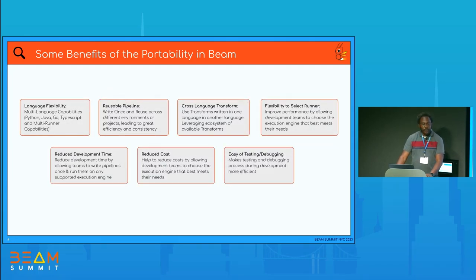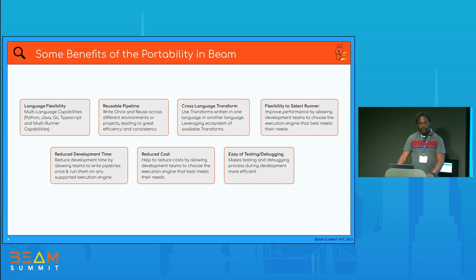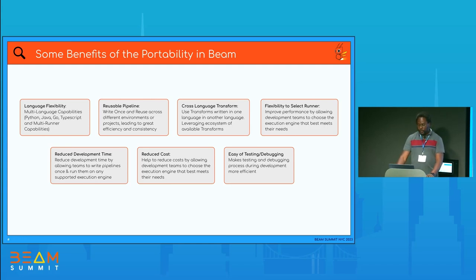The benefits of portability for our team include language flexibility — we have people natively writing in Python, Java, and Golang. As long as you select the SDK, you can run on any of our runners, giving us language-agnostic behavior. We can create reusable pipelines and leverage the cross-language platform — I love all the IO transforms written in Java that we can reuse in Python. Overall, it reduces development time, speeds things up, and reduces cost because developers can test locally without spending money on managed cloud services.